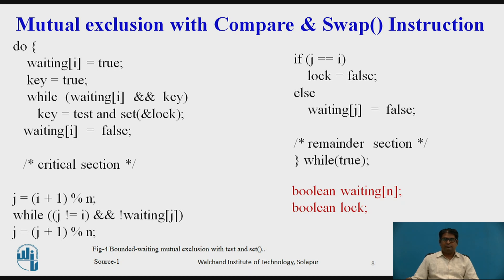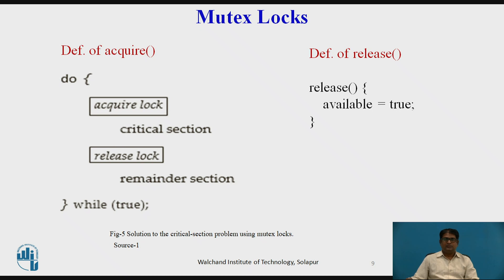To prove the bounded waiting requirement is met, we note that when a process leaves its critical section, it scans the array waiting in cyclic order. It designates the first process in this ordering that is in the entry section — where waiting[j] is true — as the next one to enter its critical section. The simplest of these tools is the mutex lock. We use mutex locks to protect critical regions and prevent race conditions, meaning a process must acquire the lock before entering a critical section and release the lock when it exits.